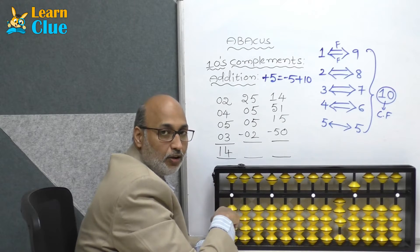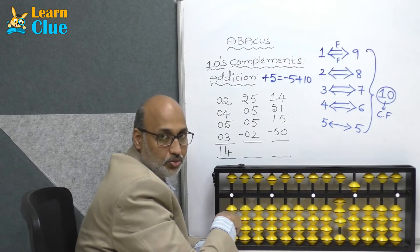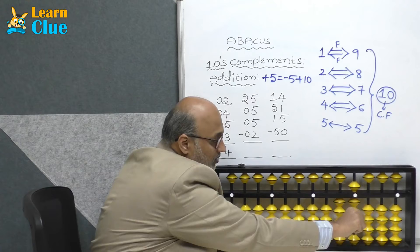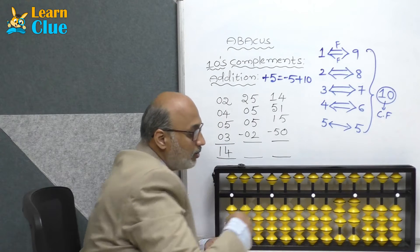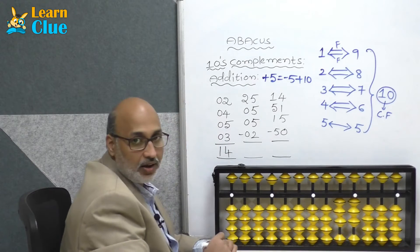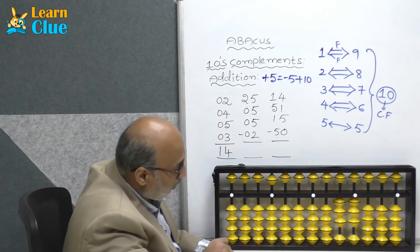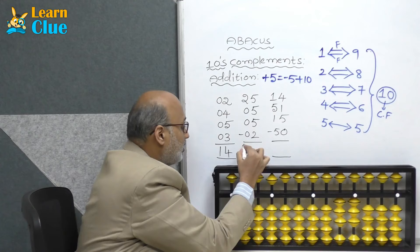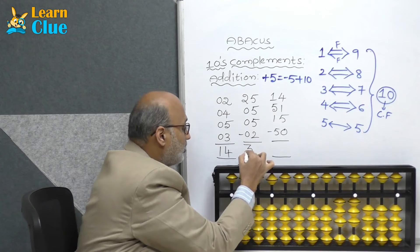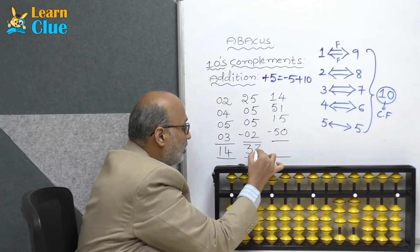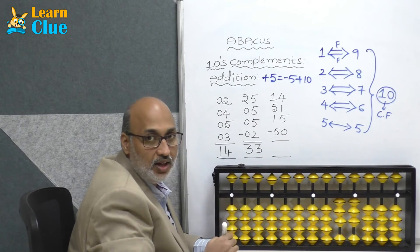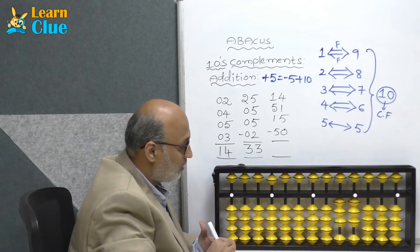What is the technique of minus 2? It's nothing but plus 3 minus 5. Now tell me, what is the answer? Answer is 33.